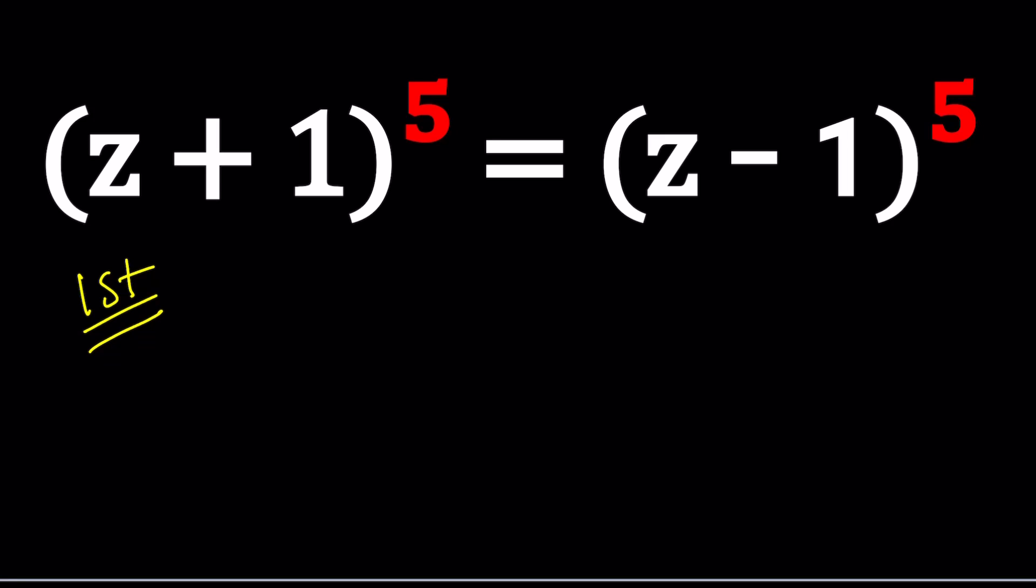My first method is going to be kind of brute forcey. I'll expand everything because why not? We have something called the binomial theorem that gives us Z to the fifth plus 5Z to the fourth plus 10Z cubed plus 10Z squared. Notice the symmetry. Pascal's triangle plus 5Z plus 1 equals the same thing with the alternating signs with the plus minus Z to the fifth minus 5Z to the fourth plus 10Z cubed minus 10Z squared. I'm writing kind of small because I want to fit everything on one line.